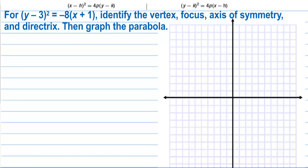For (y − 3)² = −8(x + 1), identify the vertex, focus, axis of symmetry, and directrix, then graph the parabola. The vertex is (−1, 3). We keep x with x and y with y, but do the opposite sign in the parentheses: plus 1 gives x-coordinate −1, and minus 3 gives y-coordinate 3. Let's plot (−1, 3).